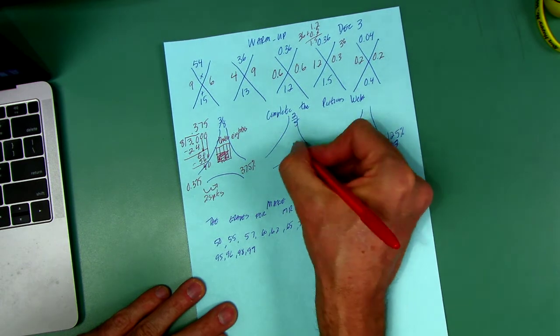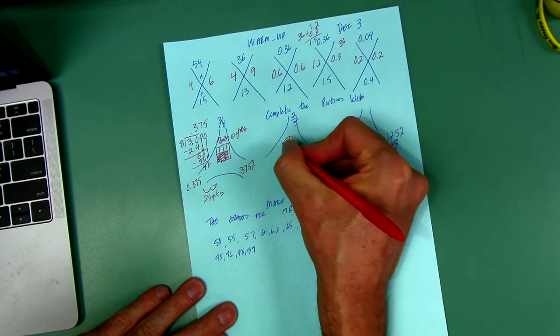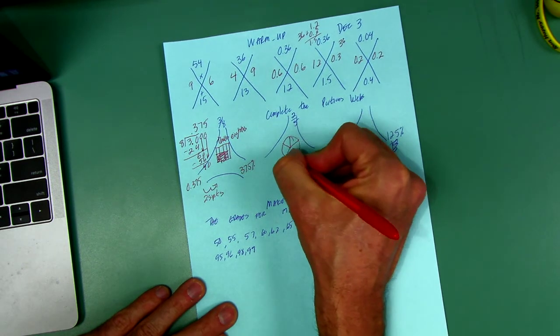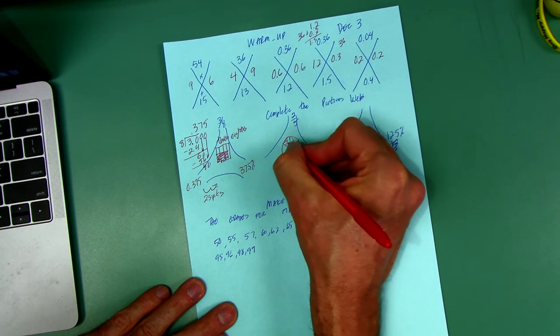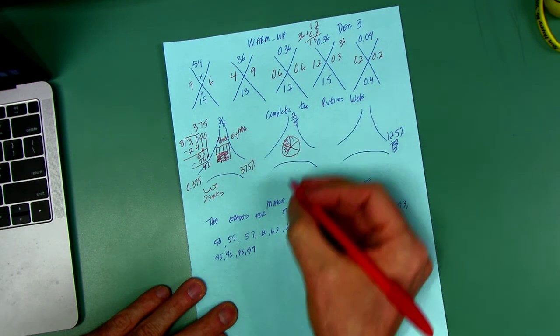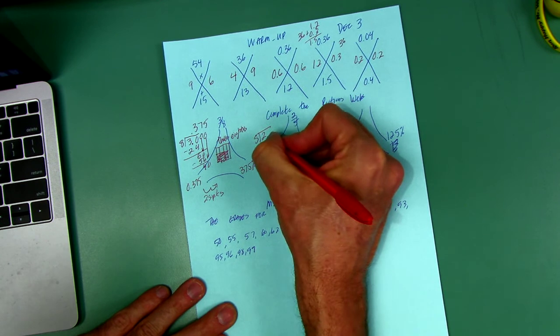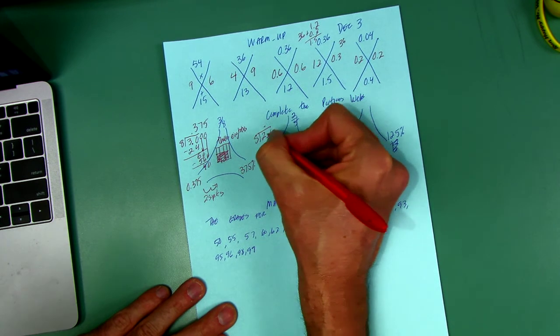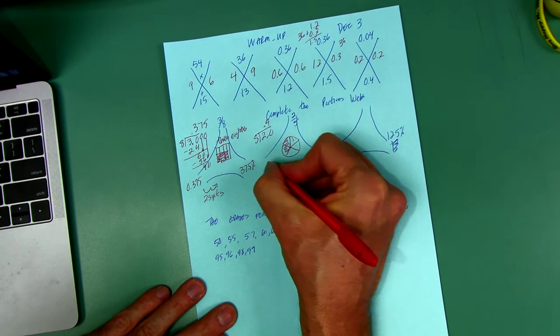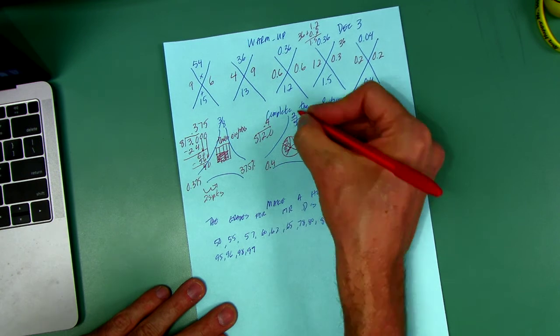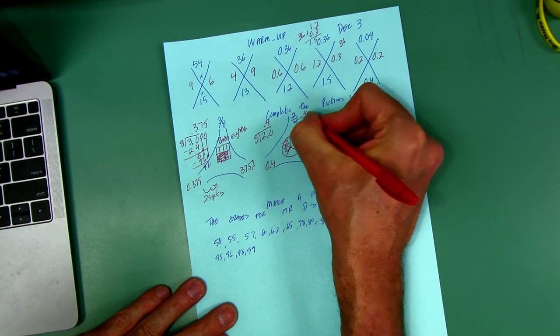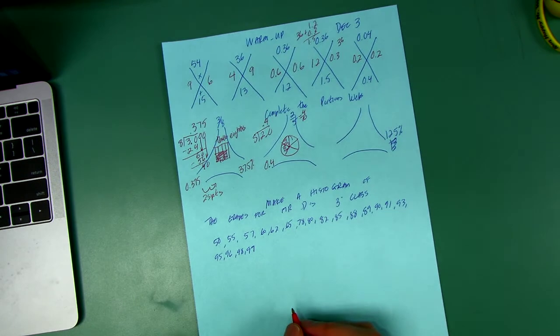2 5ths. Draw a picture. I almost always go to a circle when I go 5ths. I don't have to. I'm going to shade in two of them. Less than half, right? Divide the bottom into the top. 5, it doesn't fit. Add a decimal, bring it up. Add a 0. 5 goes into 20 4 times. Does that make sense? 4 10ths is the same as 2 5ths, right?